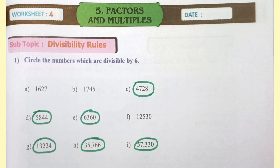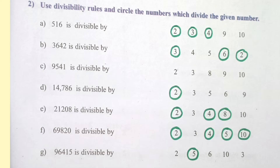Worksheet 4. Circle the numbers which are divisible by 6: 4728, 5844, 6360, 13,224, 35,766, 57,330 are divisible by 6. Use divisibility rules and circle the numbers which divide the given number. 516 is divided by 2, 3, 4. 3642 is divided by 3, 6, 2. 9541 is divisible by nothing. 14,786 is divisible by 2. 21,208 is divisible by 2, 4, 8. 69,820 is divisible by 2, 4, 5, 10. 96,415 is divisible by 5.